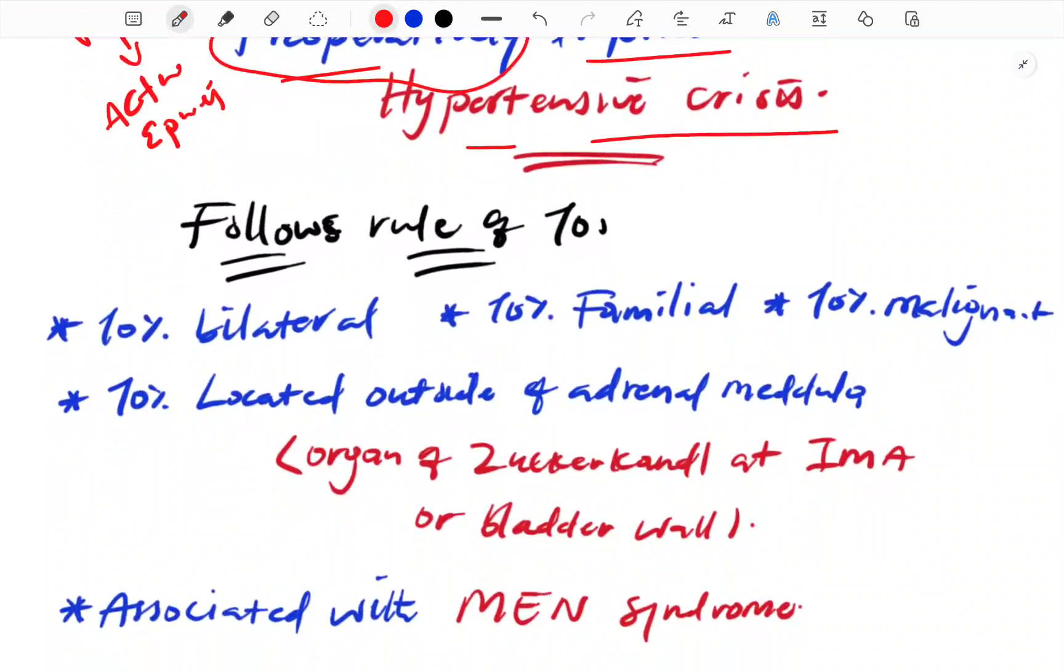There is a rule of 10s for pheochromocytoma. 10% are bilateral, 10% are familial, 10% are malignant, and 10% are located outside the adrenal medulla.